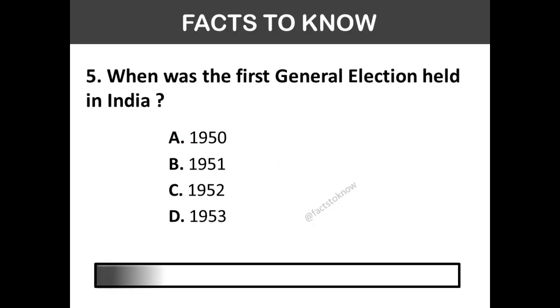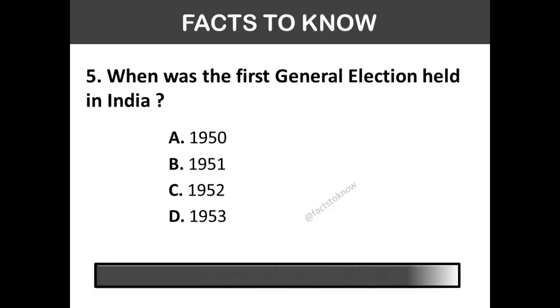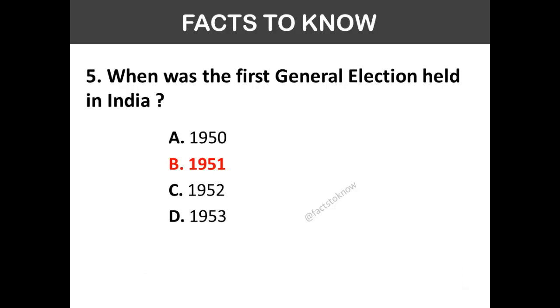When was the first General Election held in India? The correct answer is option B: 1951.